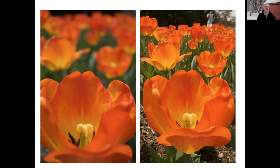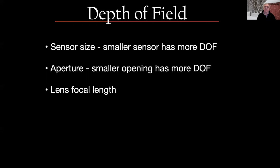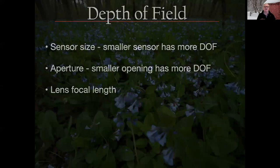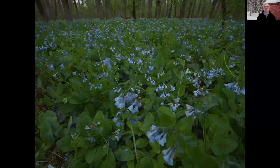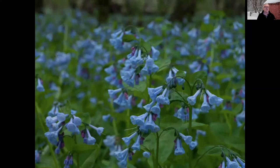Another factor controlling depth of field is lens focal length. A wide-angle lens, less than 50mm, has more depth of field than a telephoto lens, which is more than 50mm. A field of bluebells shot with a 20mm lens at f8 gives a lot of depth of field, accentuated by the wide angle. Switch to a 200mm lens still at f8 and suddenly you don't have much depth of field. Which photo is better? It depends on what you're trying to say — it's a creative decision.